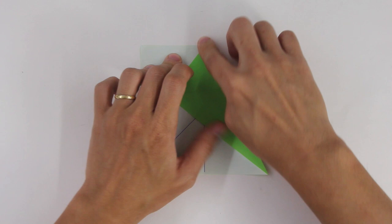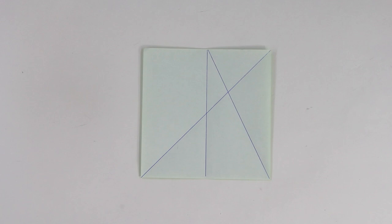The lines will look like this. Now, fold making the bottom of the paper go up to the crossing point of these two lines.